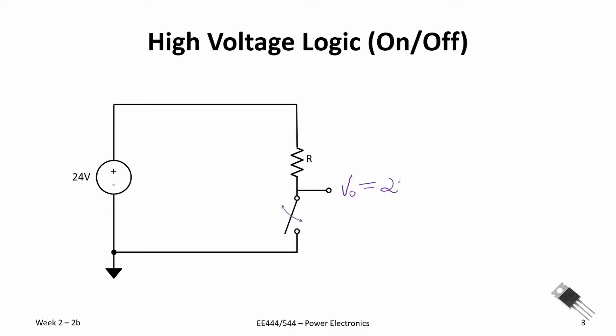With the switch open, the voltage at that point relative to our reference is equal to 24 volts, because no current is flowing through the resistor. All the voltage is at that pin.